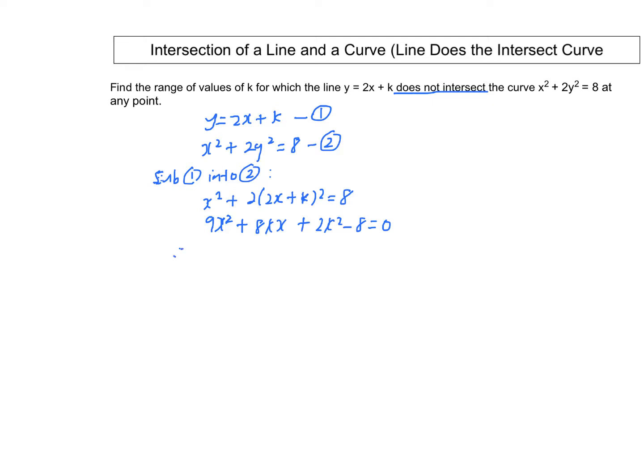From here, a = 9, b = 8k, and c = 2k² - 8.